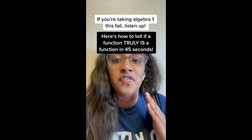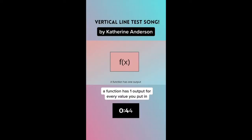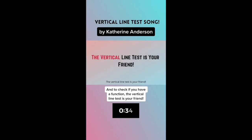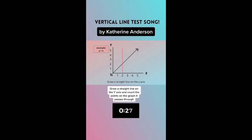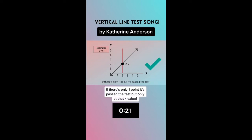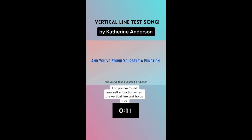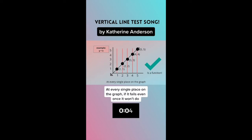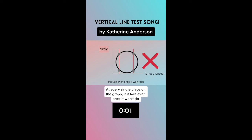Here's how to tell if a function truly is a function — in 45 seconds. A function has one output for every value you put in. To check if you have a function, the vertical line test is your friend. Draw a straight line on the y-axis and count the points on the graph it passes through. If there's only one point, it passes the test — but only at that x value. You've found yourself a function when the vertical line test holds true at every single place on the graph.